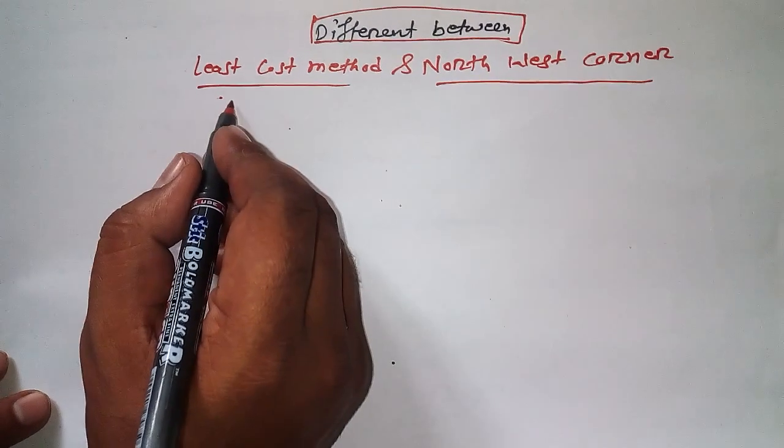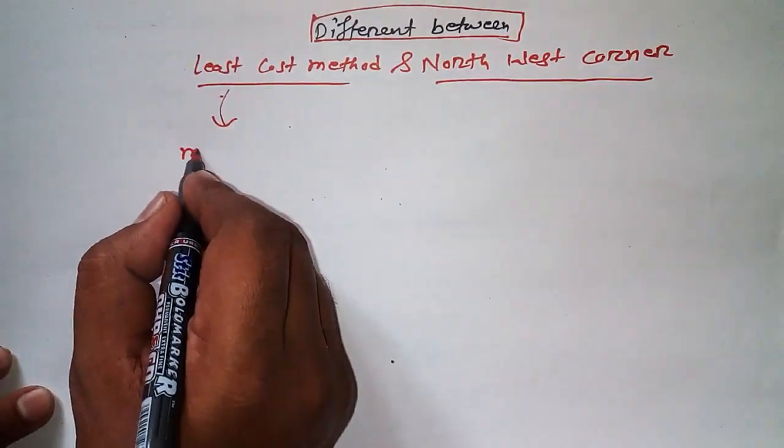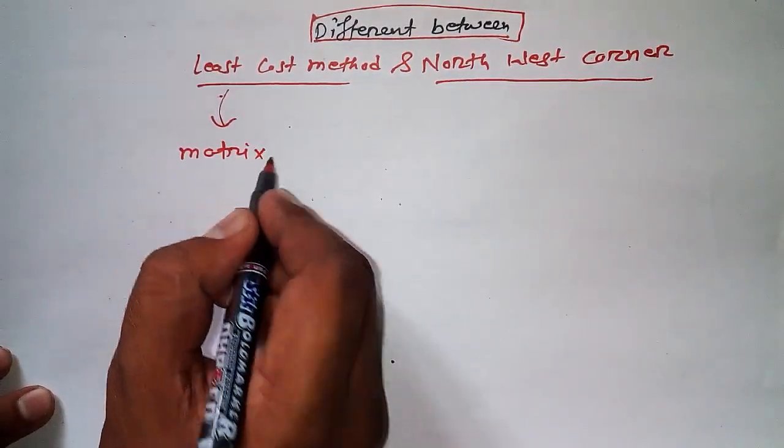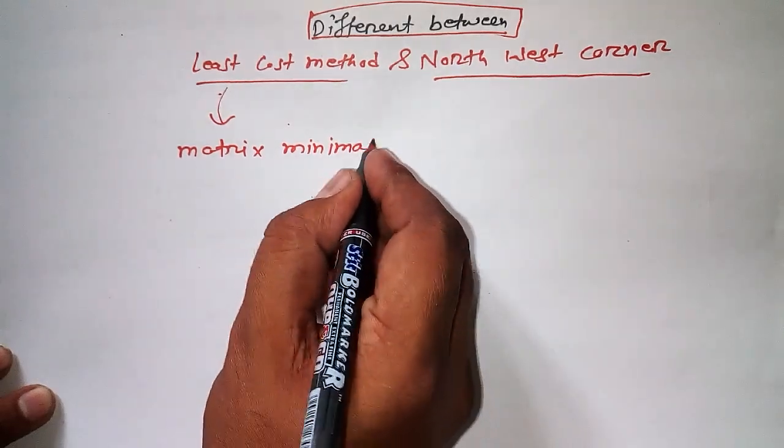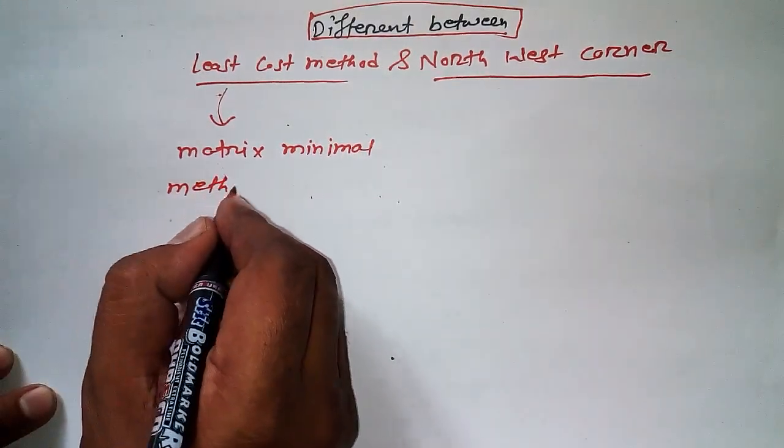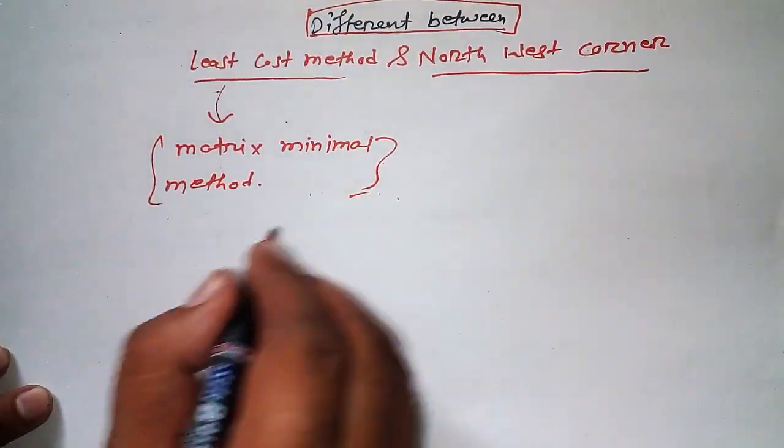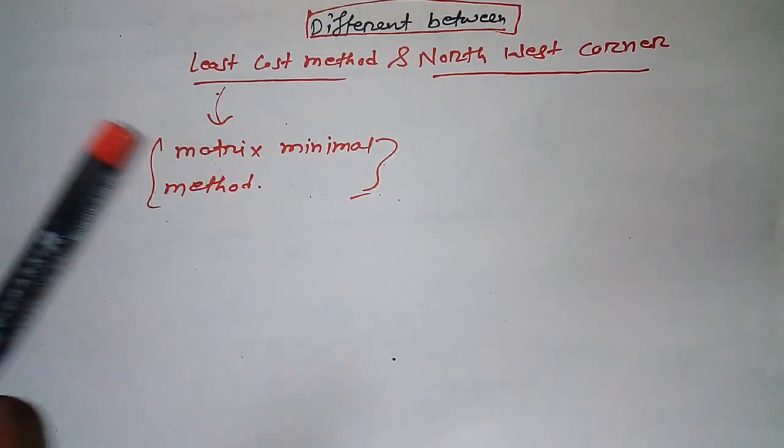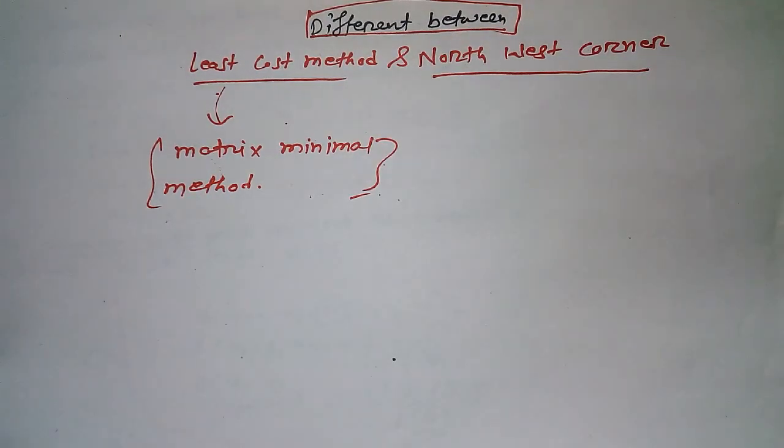Least Cost Method has another name, that is Matrix Minimal Method. So you must not get confused with this method. Probably sometimes we have seen questions in the examination that say solve the transportation problem by using Matrix Minimal Method, and both the methods are same but they have two names.